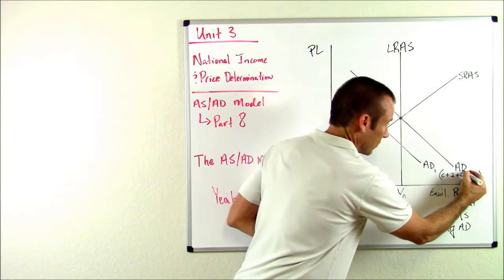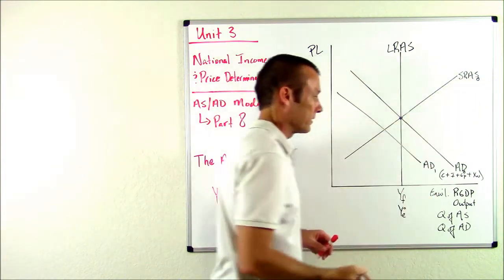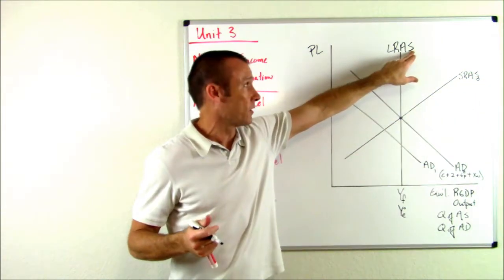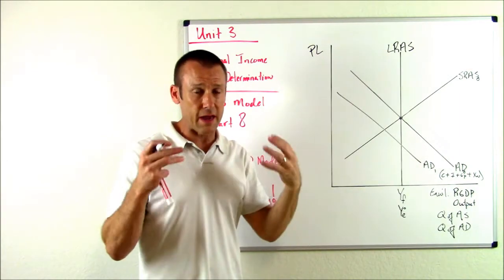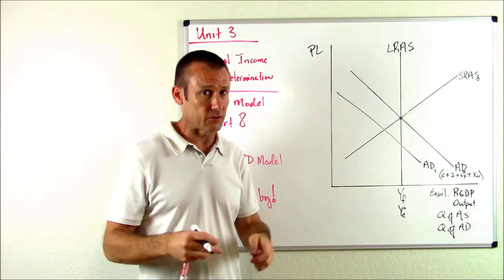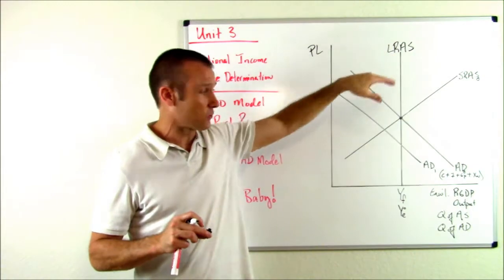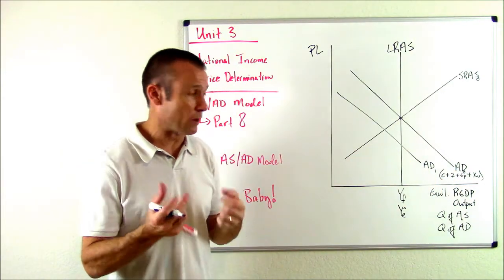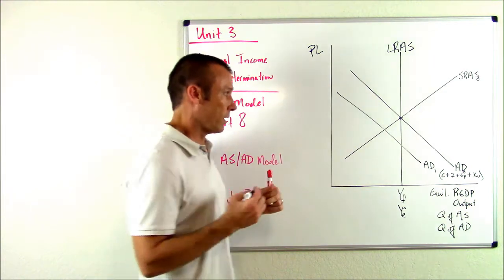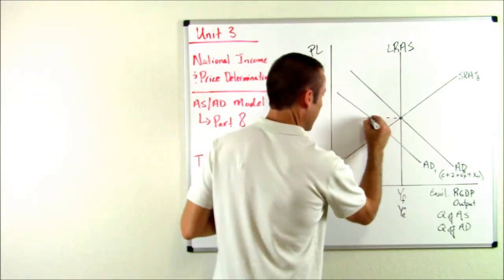So here we see AD shift to the left. I'm going to put a little sub zero over here and a sub zero right there. I don't need to put a little sub zero for LRAS because it's not going to shift in this example. We rarely ever shift the LRAS. So I'm just going to leave LRAS the way it is. AD shifts off to the left, so where's our economy going to go?